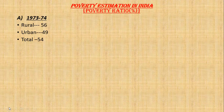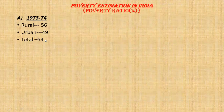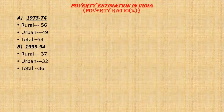In 1973 to 74, you can see that in rural areas the percentage of poor is 56% and urban it was 49%, so the total is 54%. Next, in 1974, rural area is 37% and urban is 32%, and the total average is 36%.